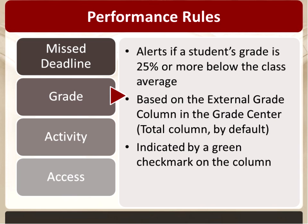The grade criteria will give you an alert if a particular student's grade is 25% or more below the class average. So if the class average is 95, any student with a 70% or below will have a grade alert. This is based on the external grade column in the Grade Center — the column with a green checkmark next to the column name. By default it's the total column, but if you're using a weighted grading column, you should move that external grade checkmark to the weighted total column so that Blackboard compares grades based on the correct measure.